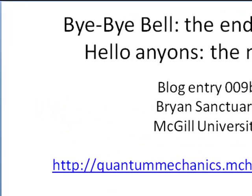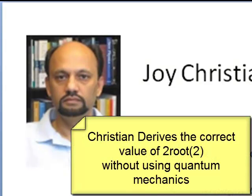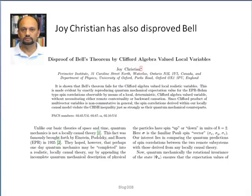Christian indeed derives the correct value of 2√2 without quantum mechanics and for classical systems. This is what Bell should have got. Christian and Gerd have found Bell's errors in two independent studies.